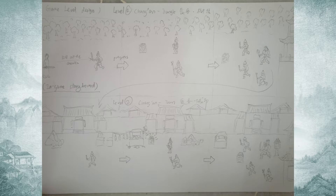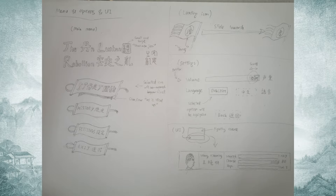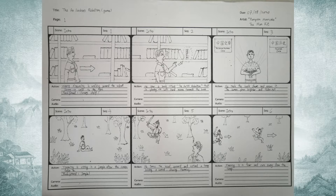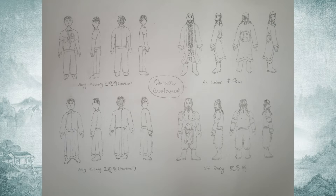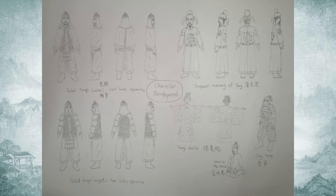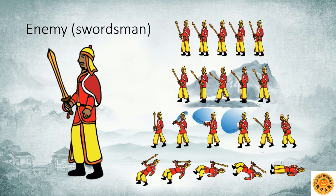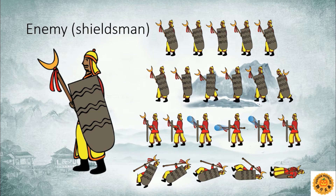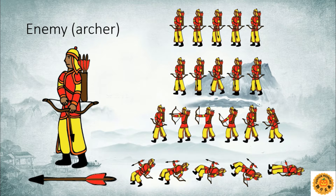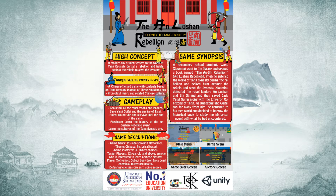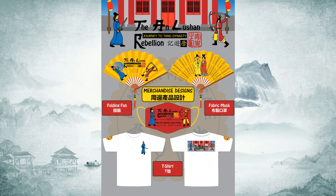Next, I'll show some of the game book brainstorming — the ideas for this game — from the physical game book to the digital version. This is the infographic poster for the game. There are also three merchandise designs: a folding fan, a fabric mask, and a T-shirt.